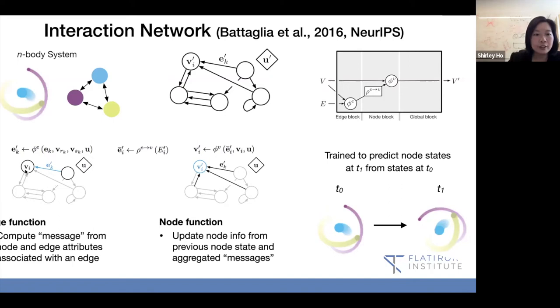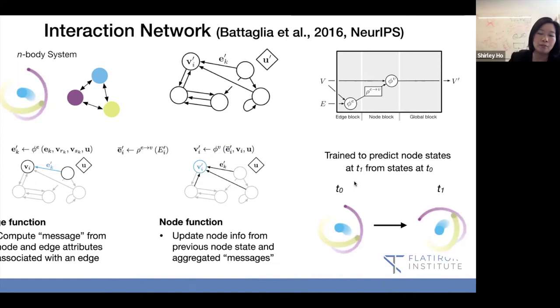And the edge function here computes the messages from the nodes and the edge attributes. So you can decide what the edge attribute is. A lot of times, these attributes are unknown, and it could be weights that you update as it goes. And then you have the node function that updates the node info, which takes in all the edge messages and say, okay, taking all the edge messages and what I have from previously, like my node states from before, and the global variable u, I can compute what happened next. And you train it to predict the node states from t0 to t1.